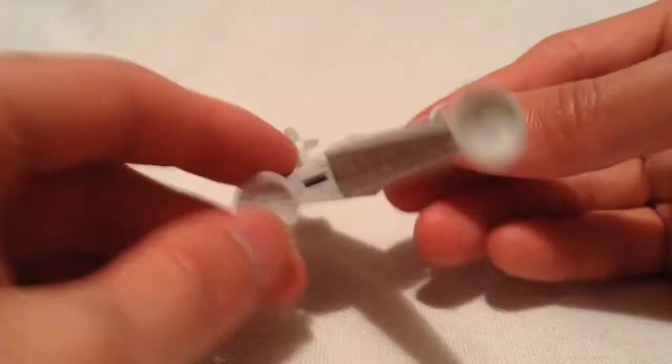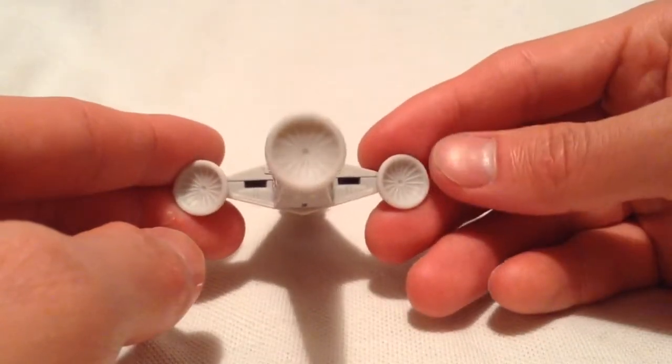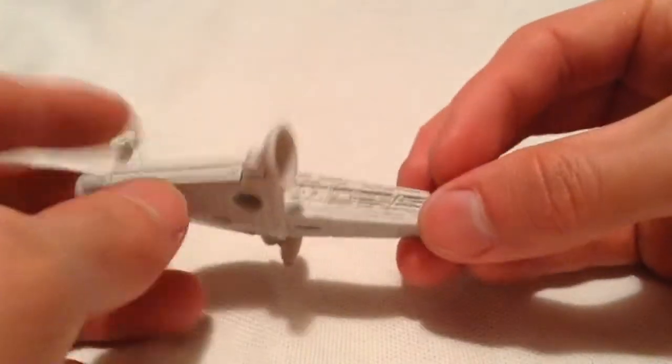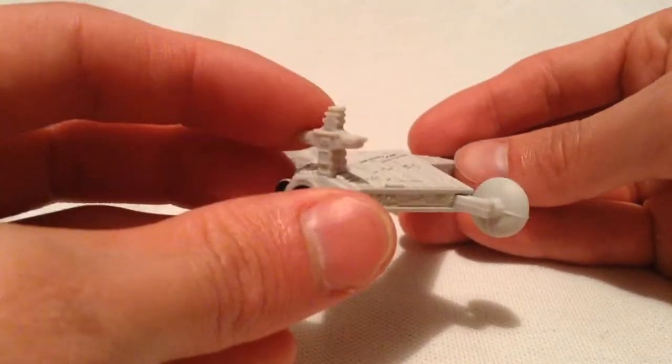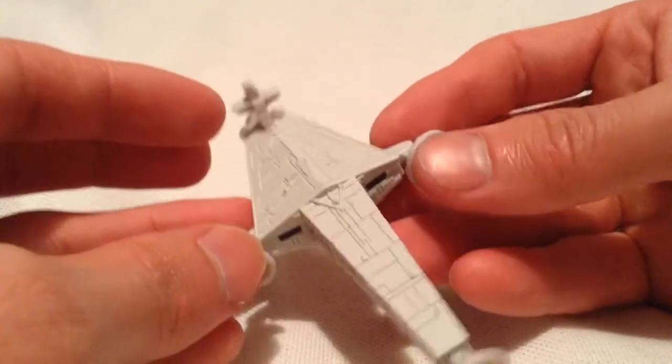So it looks like a bunch of radar dishes on it for, I guess, detecting the Rebels. Got the tower there, kind of like the Imperial Destroyer. Pretty cool.